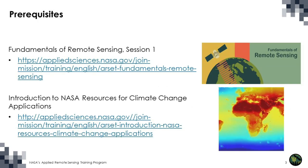The prerequisites for this two-part training are RSET's Fundamentals of Remote Sensing, Session 1, and the two-part training series from 2021, Introduction to NASA Resources for Climate Change Applications. The Fundamentals course provides a general overview of remote sensing and its application to disasters, health and air quality, land, water resources, and wildfire management.